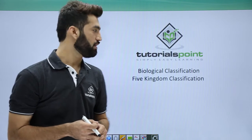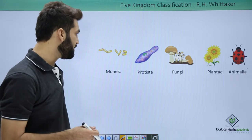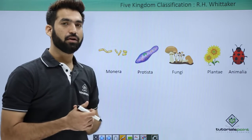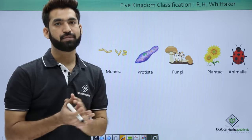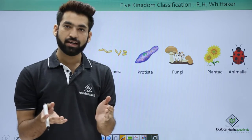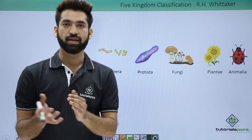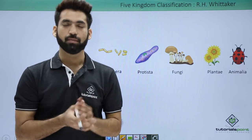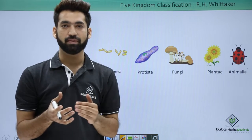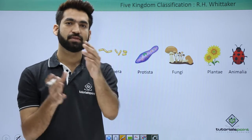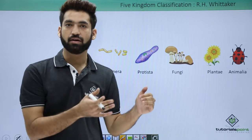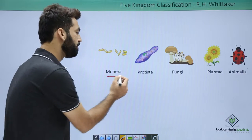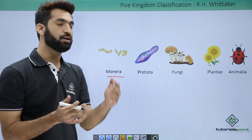In this session we'll be discussing the five kingdom classification system, which was proposed by R.H. Whittaker. He observed all organisms — organisms could be prokaryotes or eukaryotes. Prokaryotes are always unicellular, like bacteria, but eukaryotes could be unicellular or multicellular. Prokaryotes have the kingdom called Monera, and unicellular eukaryotes have the kingdom called Protista.